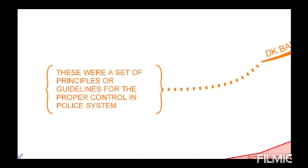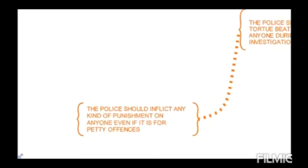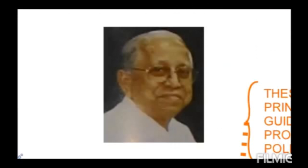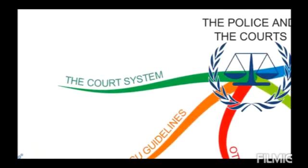These were a set of principles and guidelines for the proper conduct of the police system. The police should always be within the law and should not inflict any kind of punishment on anyone, even for a petty offense. Koi bhi police ka banda kisi bhi galat kaam mein dikhai nahi dena chahiye. They should wear clean, visible, and accurate identification — that is, name and designation tag. Jo bhi unka rank hai, jo bhi unka naam hai, woh badge unhone properly pehna ho, with clean and visible dress, so that each and everyone can identify that haan, yeh police hai.